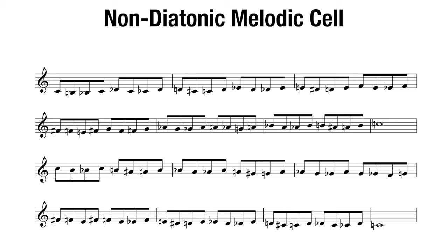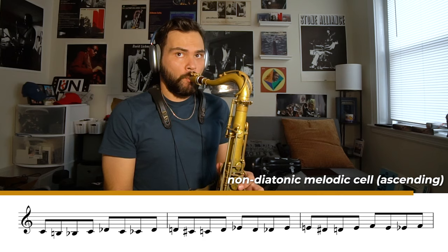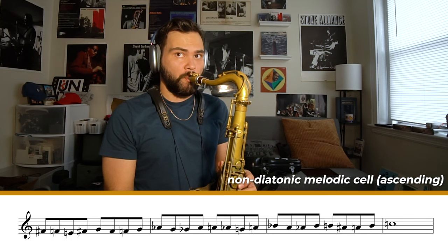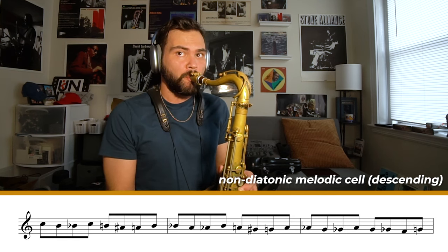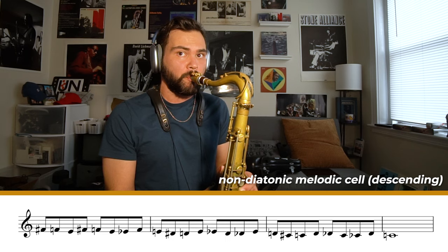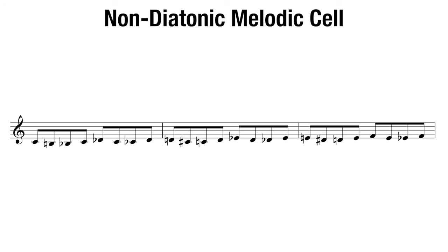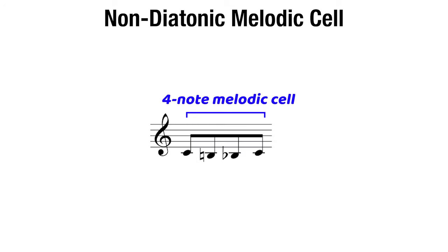For our first example, we're going over one of my favorite melodic cells. These are non-diatonic cells and can be found in our Melodic Cells PDF book. This is one of my favorites to not only warm up on, but include in some of my lines. We have this four-note cell that we are moving up and down chromatically here in our PDF book. The chords that it can be worked over are listed as follows.